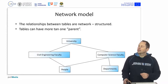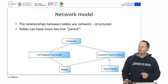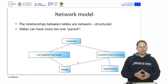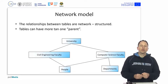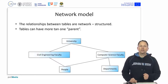A step further is a network model, where tables are related, but each table no longer has to have only one parent — they can have more than one. It is a network where people can belong to both the School of Civil Engineering and the School of Computer Science. Both models have advantages for representing organizations, but also have quite a few drawbacks.